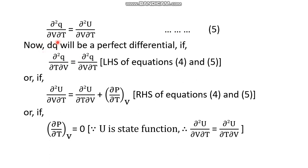Now, q is path-dependent or a state function. If q is path-dependent, then dq is not a perfect differential. If q is a state function, then dq is a perfect differential. If dq were a perfect differential, then the left-hand sides of equations four and five should be equal: ∂²q/∂T∂V must equal ∂²q/∂V∂T.